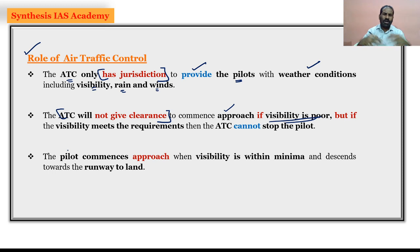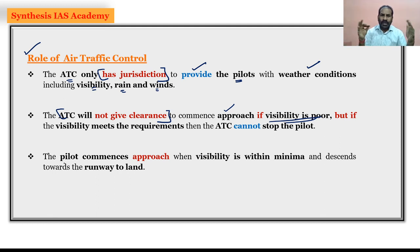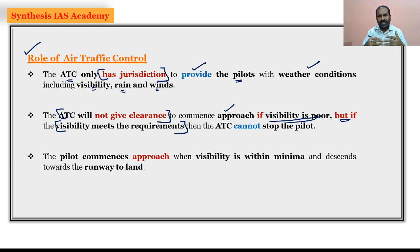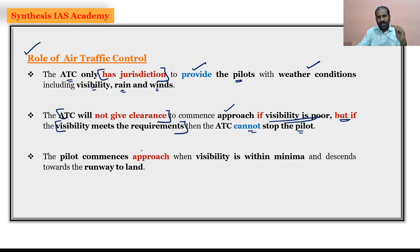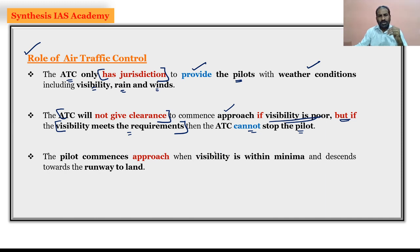If visibility is poor, ATC does not give clearance to the pilot to land on tabletop airports. However, if visibility meets the requirements provided in DGCA guidelines, then ATC cannot stop the pilot. The pilot then commences approach when visibility is within the minima and descends toward the runway to land.